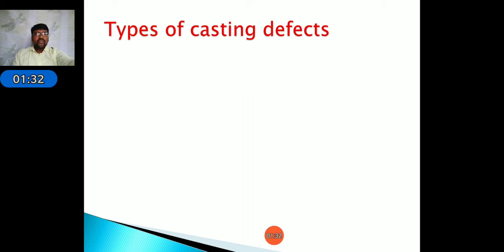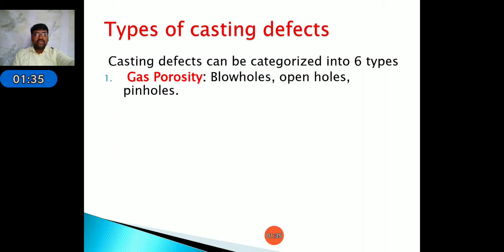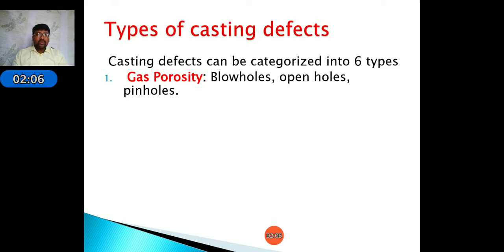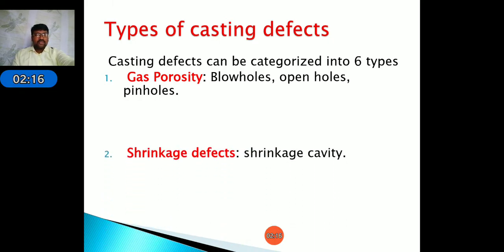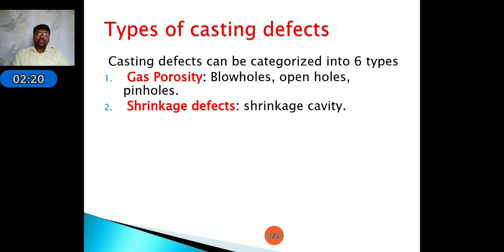There are a number of casting defects which can be grouped into six categories. The first is gas porosity, which includes blow holes, open holes, and pin holes — these develop due to gas entrapped during pouring of molten metal into the mold cavity. Gas is developed during pouring and is also released by the mold and molten metal.